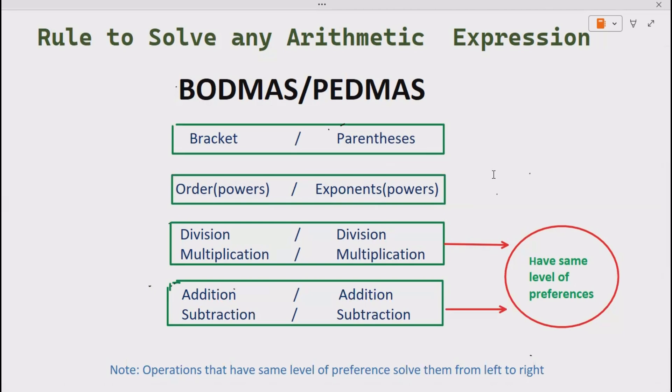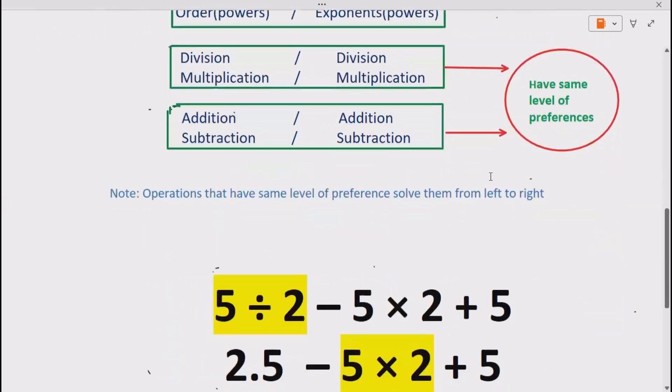It means whenever you are solving any arithmetic expression and both division multiplication come in your expression at the same time, solve that operation first that comes first going from left to right.